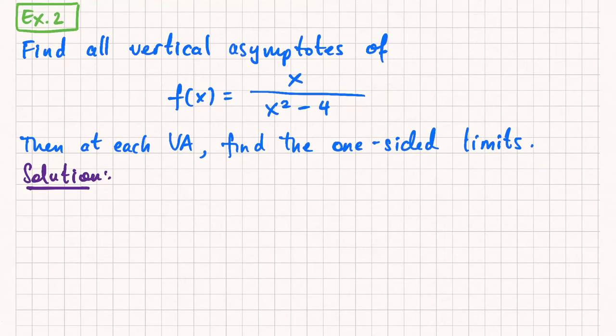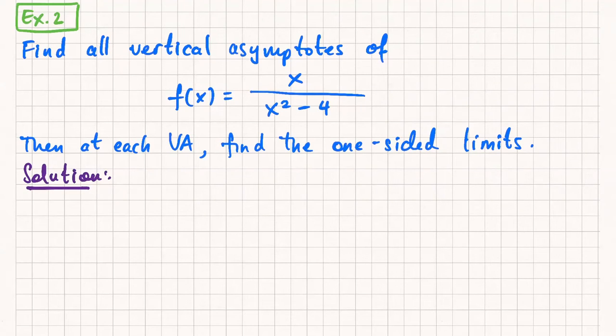You might already have an idea of how to do that. Let the denominator equal zero. So why are we letting the denominator equal zero? You may have heard this before: set the denominator equal to zero to get the vertical asymptotes.